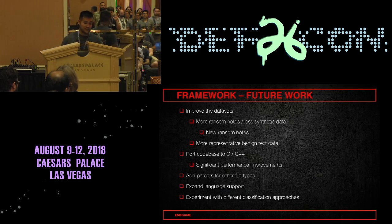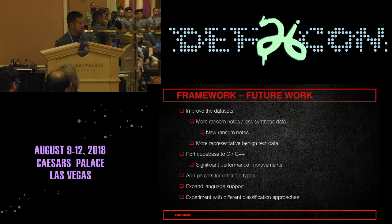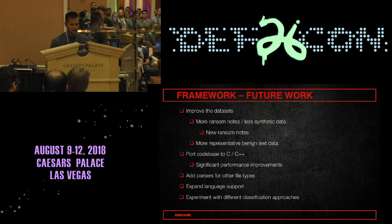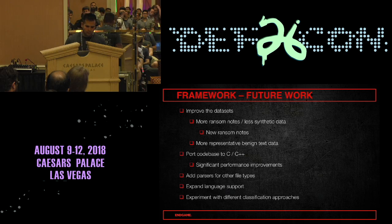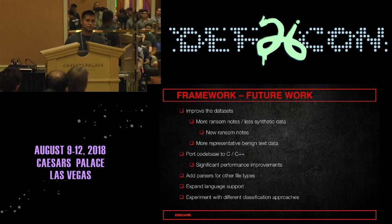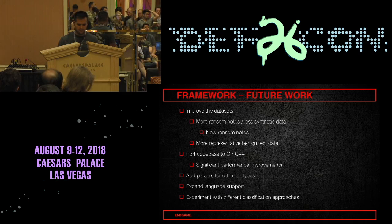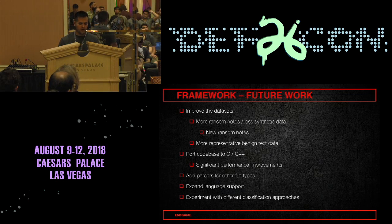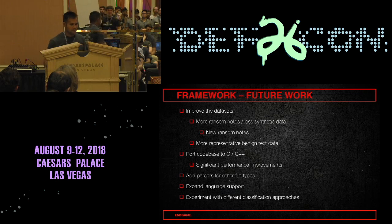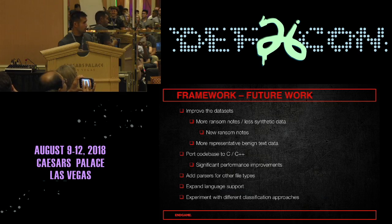For future work, we'd like to improve the datasets with more ransom notes, less synthetic data, and new ransom notes as new ransomware families emerge. We'd also like to build a more representative benign text dataset — more log files, installer files, things of that nature. Porting the codebase to a lower-level language would lead to significant performance improvements and better detection times. Supporting additional file types like formatted text and images with OCR, expanded language support, and experimenting with different classification approaches would all be valuable improvements.